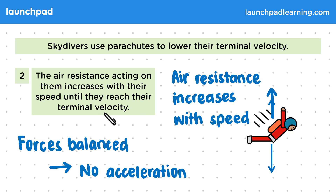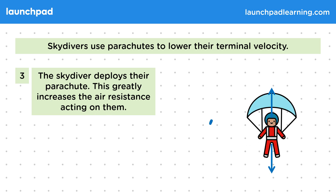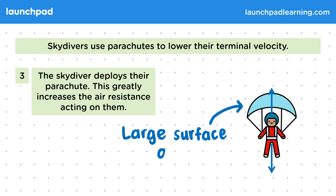But this speed will be very large and dangerous to land at, so the skydiver needs to slow down before reaching the ground. This brings us to step three: the skydiver deploys their parachute, which greatly increases the air resistance acting on them. The parachute works by having a large surface area, which causes more collisions with air molecules, so air resistance greatly increases.